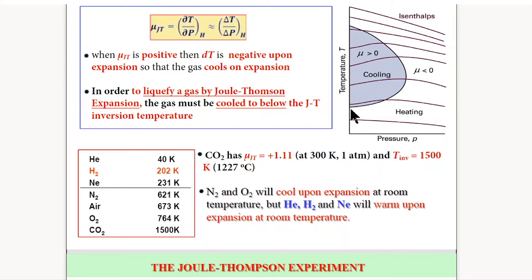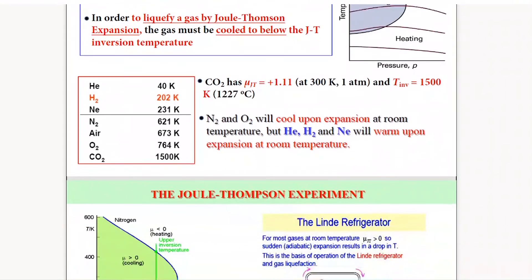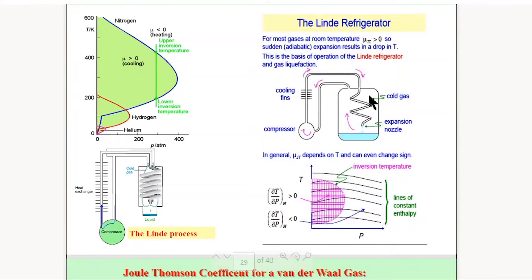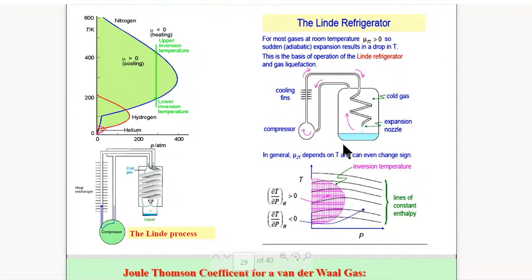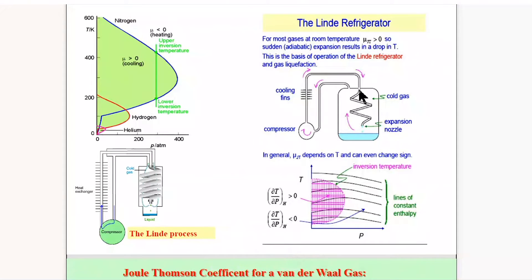The Joule-Thompson effect is utilized in the liquefaction of gases. We discussed the Linde process, where we keep compressing the gas and passing it through a throttle. Due to the throttle, there is a pressure drop and expansion. The gas cools down, and this cooled gas is again used as inlet for further compression and throttling. Eventually, for gases with positive mu_JT, we reach the liquefaction temperature.